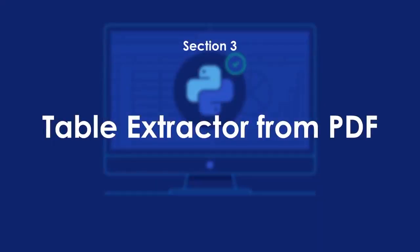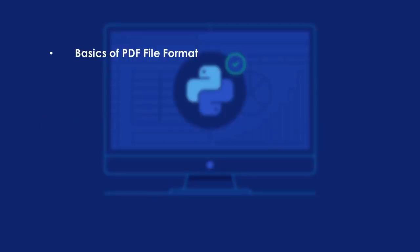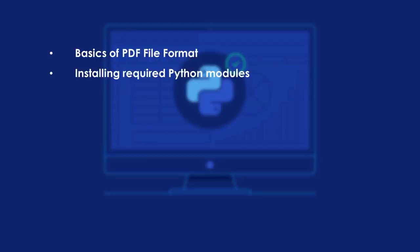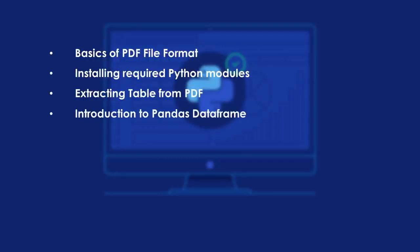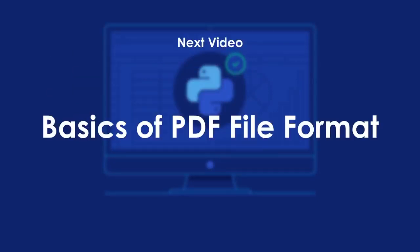In Section Three, we'll learn how to build a table extractor from PDF files. PDF is one of the most prevalent file formats we deal with daily, and extracting tables from PDFs is one of the most tedious manual tasks in data science. We'll start with PDF basics, then install required Python modules, do the coding to extract tables, and finally use pandas DataFrames to write the extracted table to a CSV file.